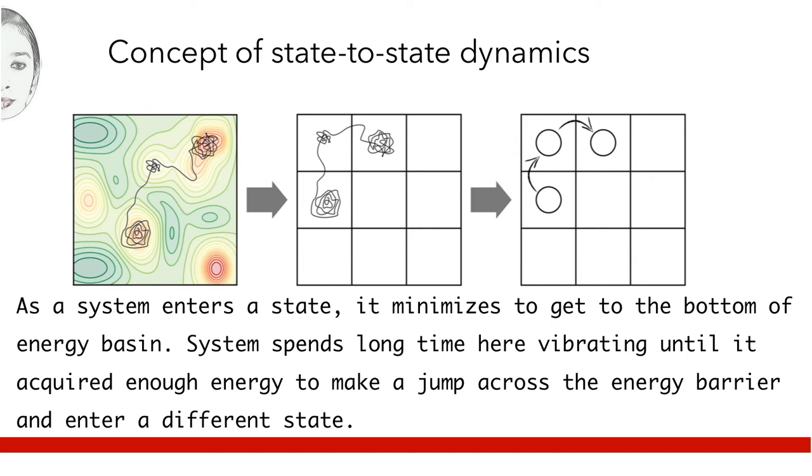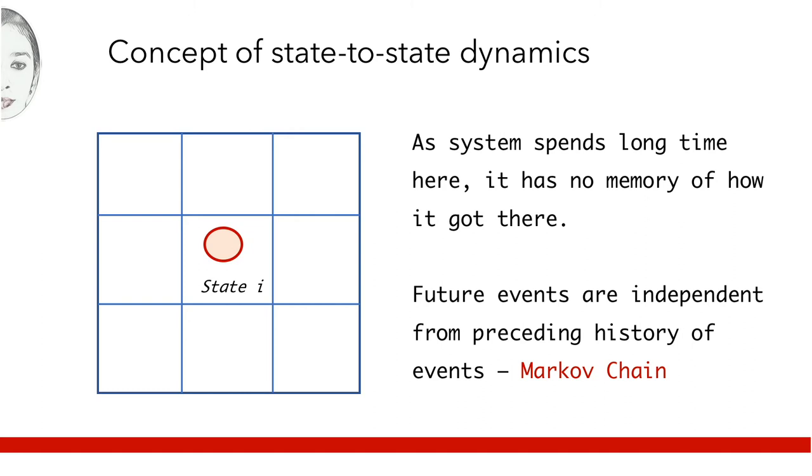By virtue of the long time a system spends in an energy basin in vibrational mode, it has no memory of how it got there. Therefore, any future event will be independent of the previous state of the system. This concept is characteristic of a Markov chain.